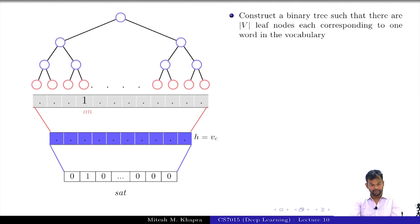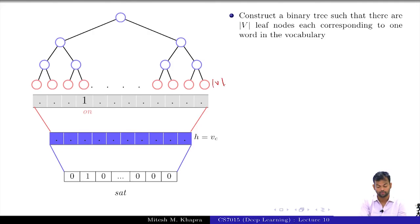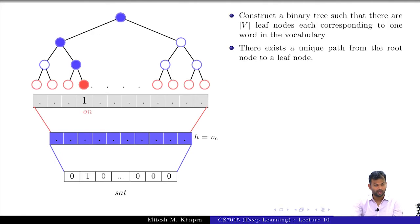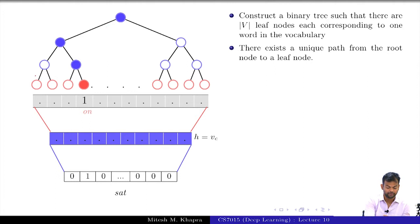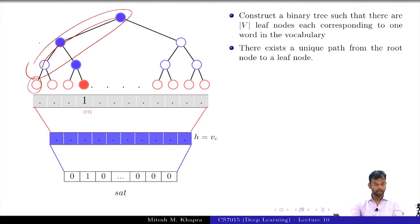Instead of this, hierarchical softmax says that you construct a binary tree such that your tree has V nodes — one node corresponding to every word. There exists a unique path from the root node to every leaf node. Every leaf node corresponds to a word. Of course, there will be overlapping portions for different words — for this word the path is these nodes, and for another word there is some overlap in the path — but for every word there is a unique path.